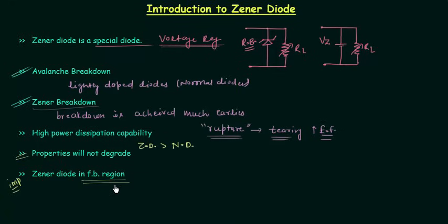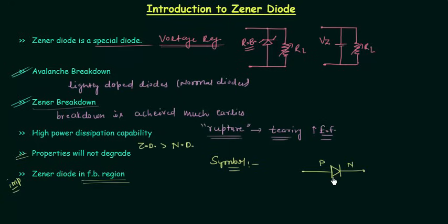Now we will move to the symbol of Zener diode. First we make the symbol of a normal diode — P side and N side — and after this I will make a crooked N, and this is the symbol of Zener diode. The voltage is represented by V subscript Z, and this is the Zener voltage.